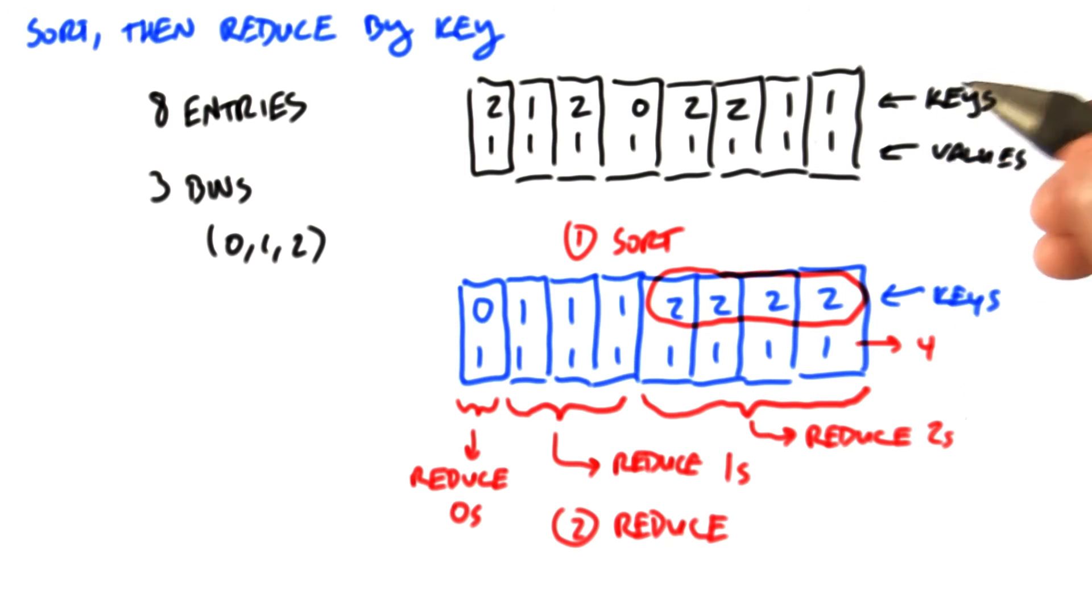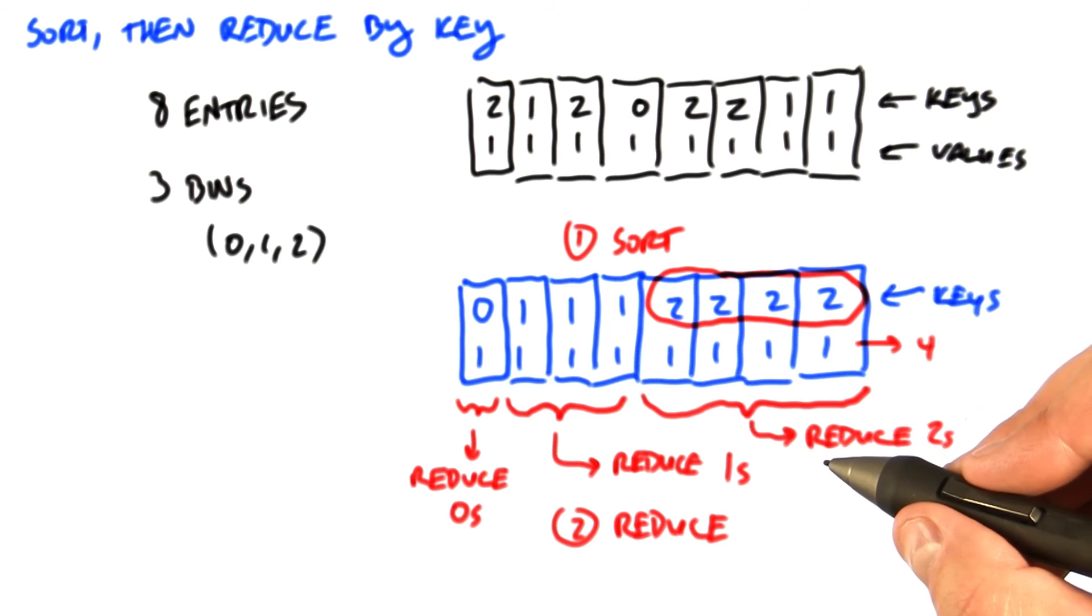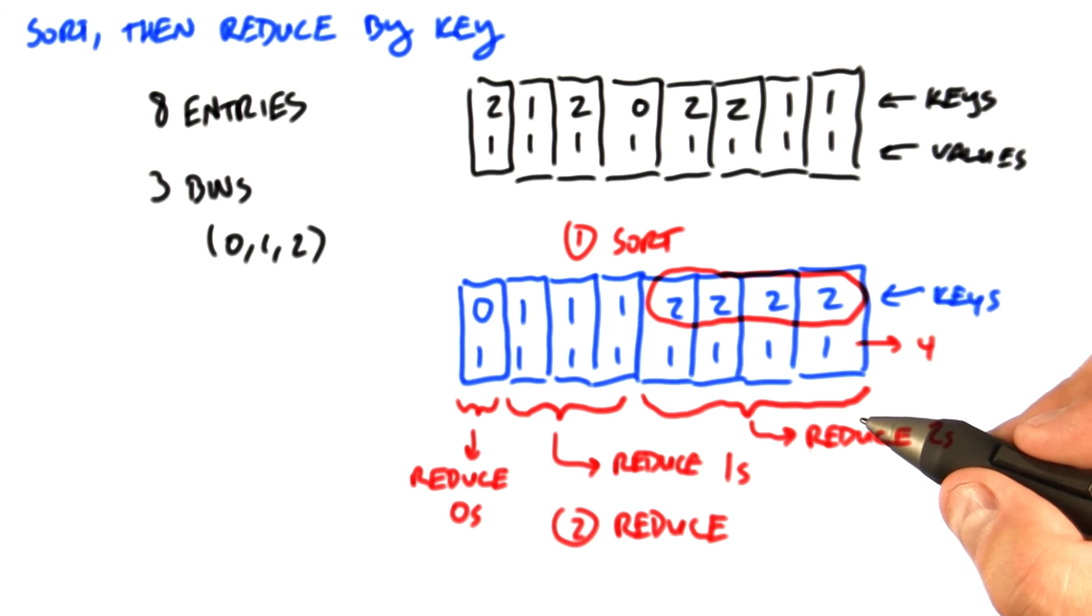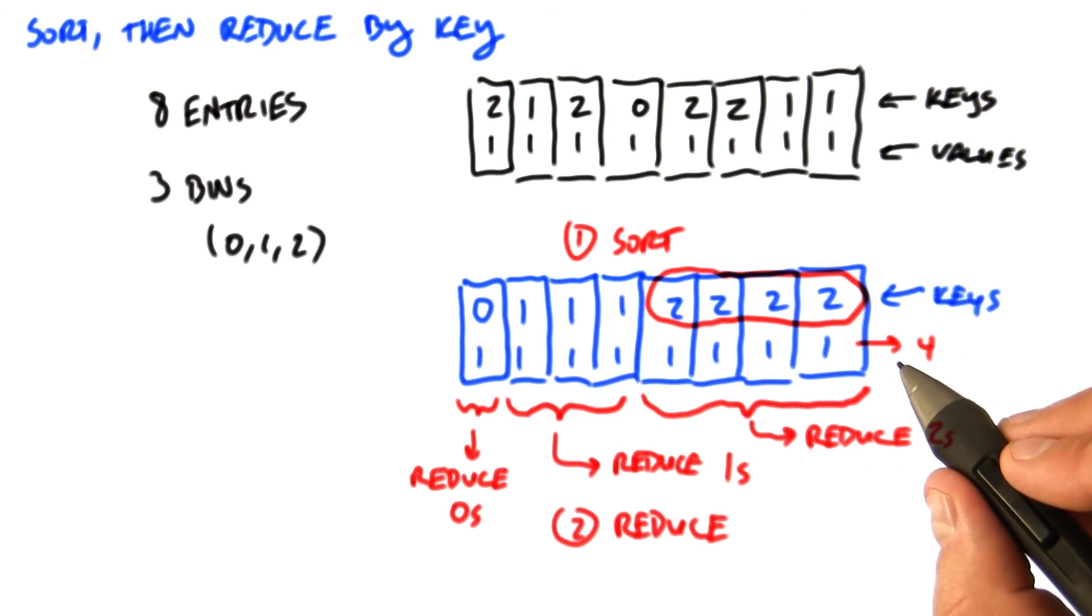Now again, this is likely not something you can do with the algorithms that you know so far. But libraries of parallel primitives may have implementations for both of these operations. For instance, the thrust library that accompanies a CUDA distribution implements both sort and reduce by key methods. Thinking about how you might implement these two operations is worth your time over the next week.